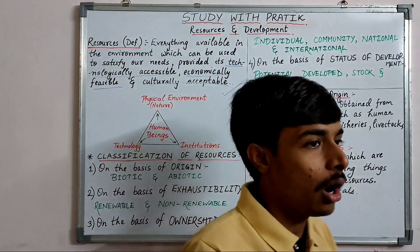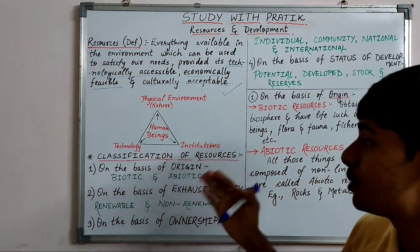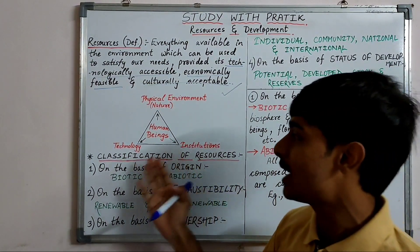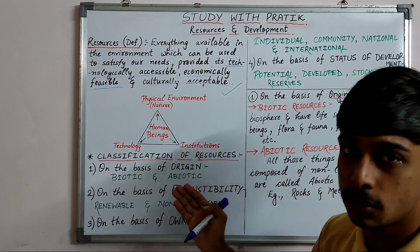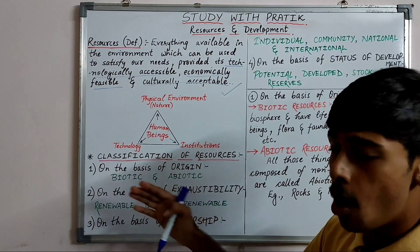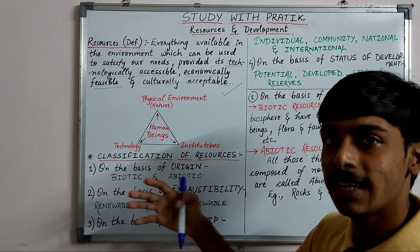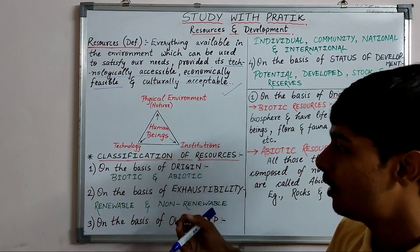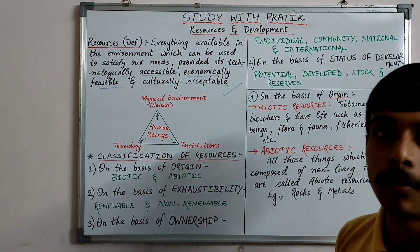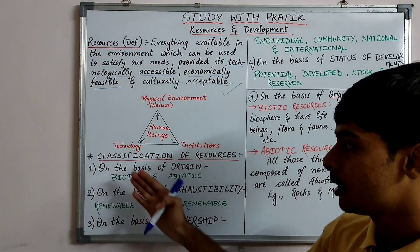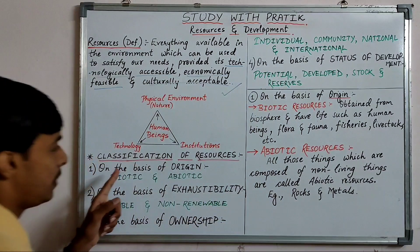Now resources can be classified. On a total of four important bases, resources are classified. The first one is on the basis of origin.